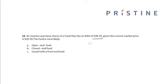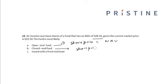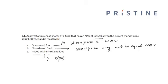For an open-end fund, the share price is equal to the net asset value. For a closed-end fund, the share price may or may not be equal to the net asset value. The kind of fund issued with a front-end load is an open-end fund, because closed-end funds do not have terms like load and no-load.